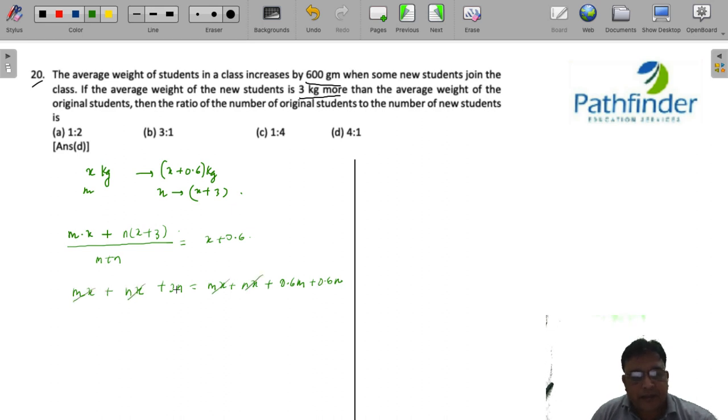mx and nx cancel here. What do you get? So 3n minus 0.6n is 2.4n, which is equal to 0.6m. So the ratio of the original students, that is m to n, must be 24 upon 6, that is 4 to 1, which should be your answer. It's an easy question.